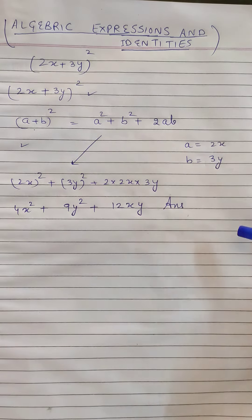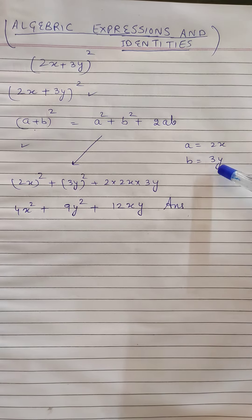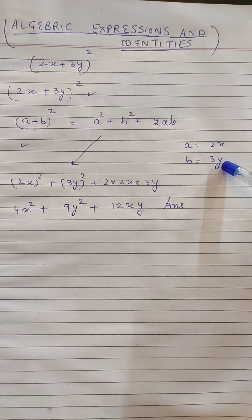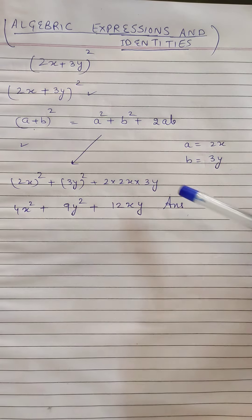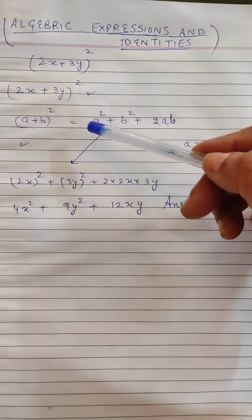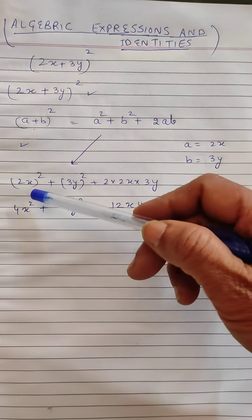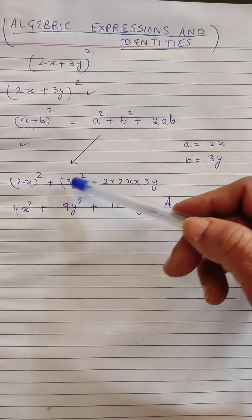And b will be 3y. So a = 2x, b = 3y. By putting these values in the right-hand side of this identity—because the question is the left-hand side, so the answer will be the right-hand side—we are putting the values over here. a² will be (2x)², b² will be (3y)².